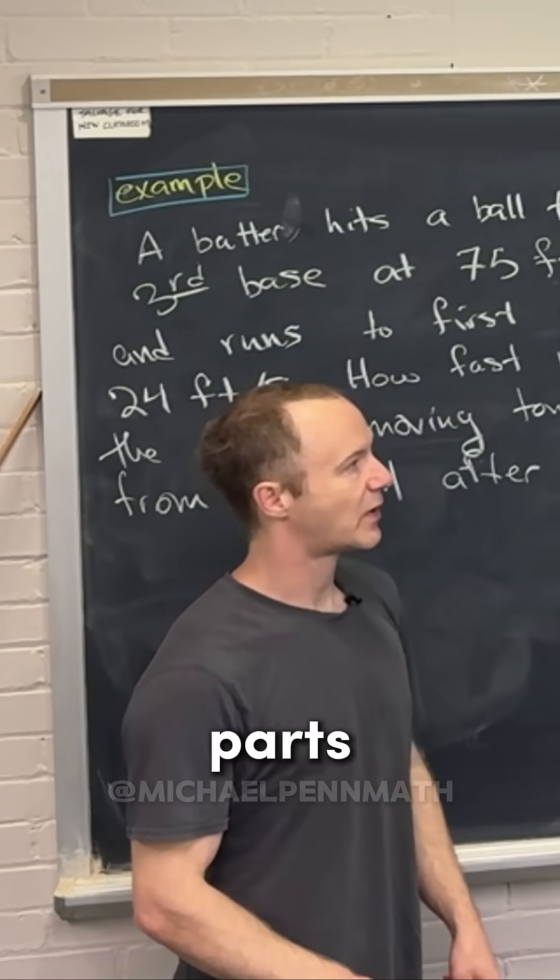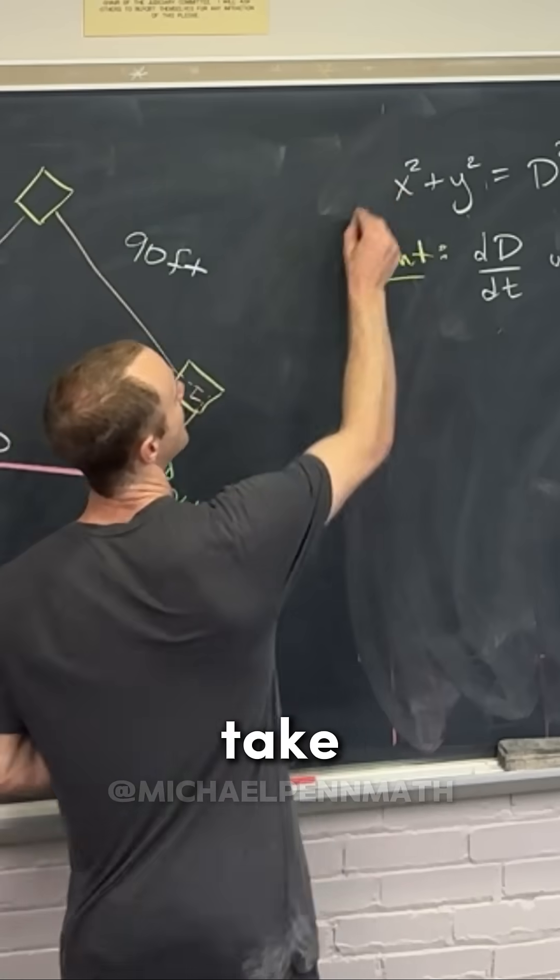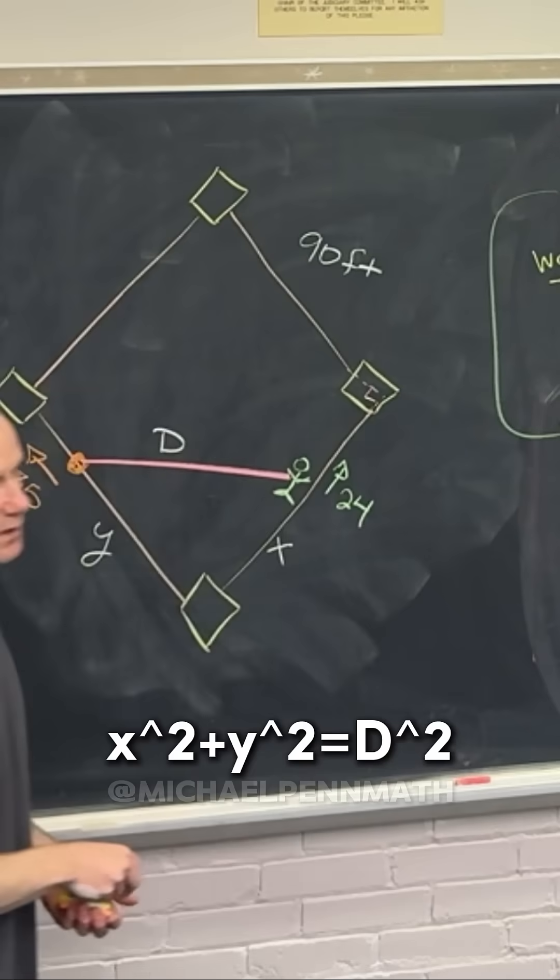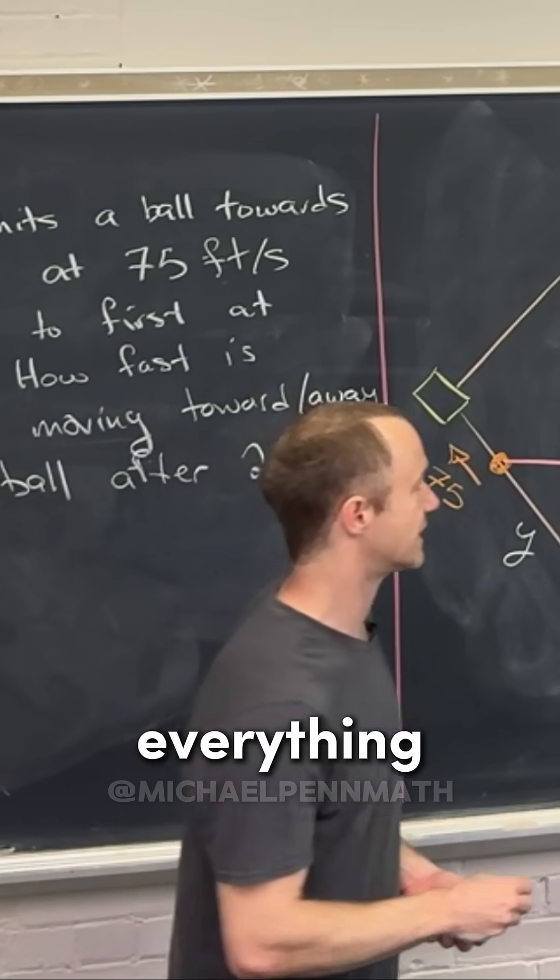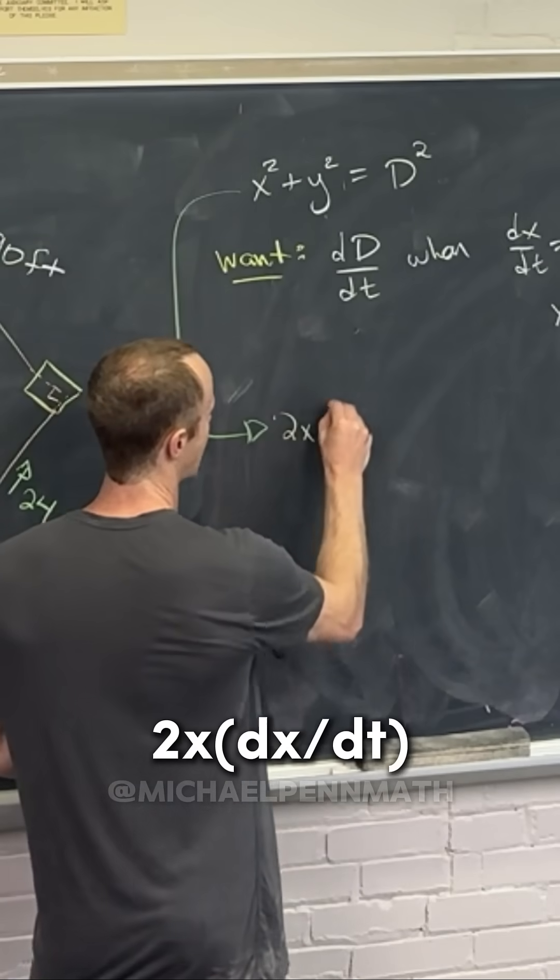We take the derivative of this relating equation of everything. That's going to give us 2x(dx/dt) plus 2y(dy/dt) equals 2d(dD/dt).